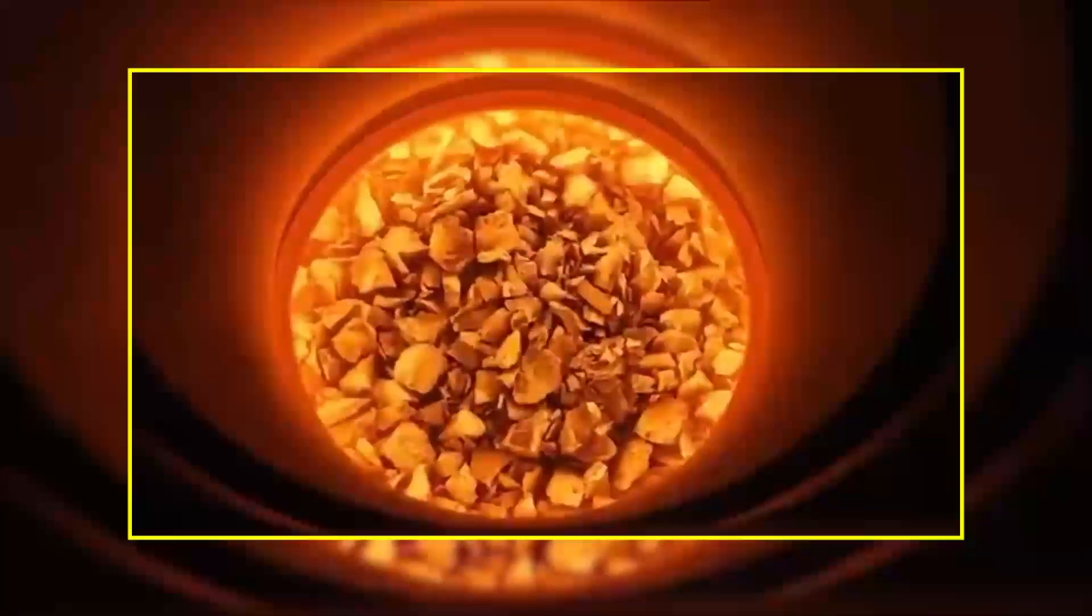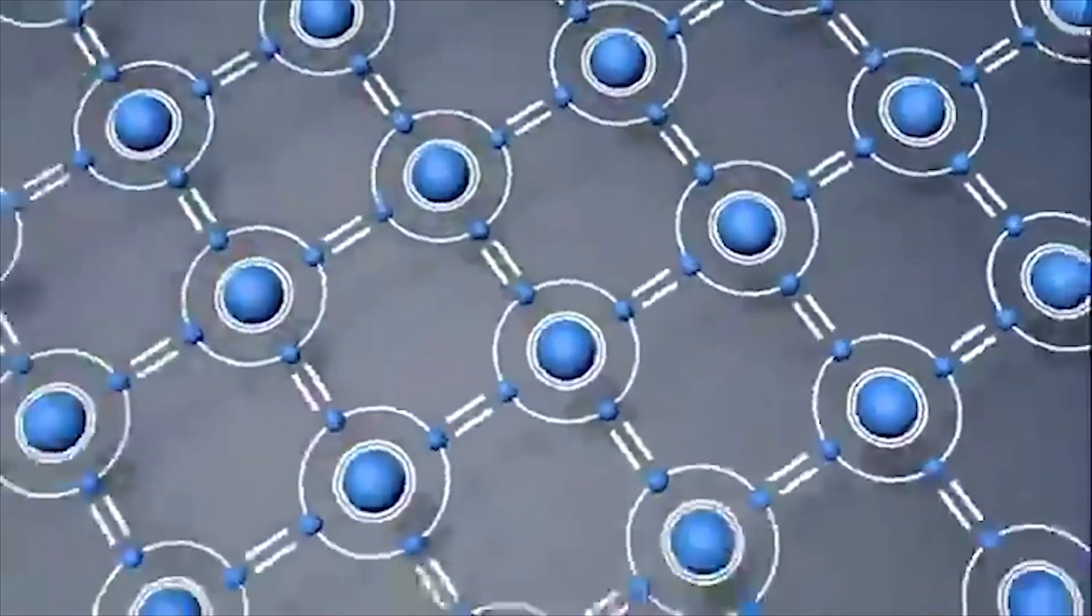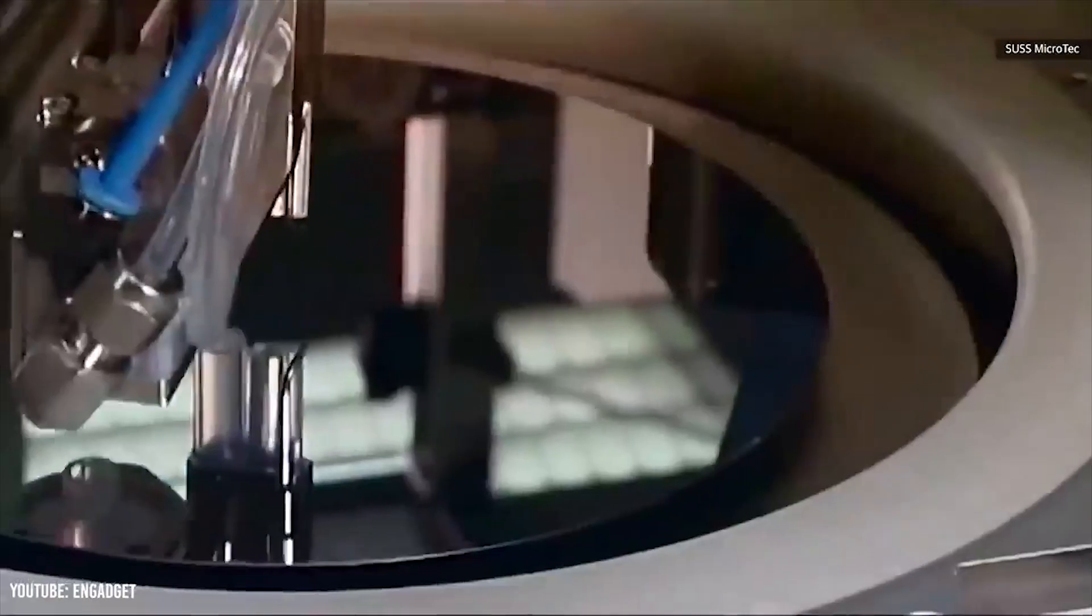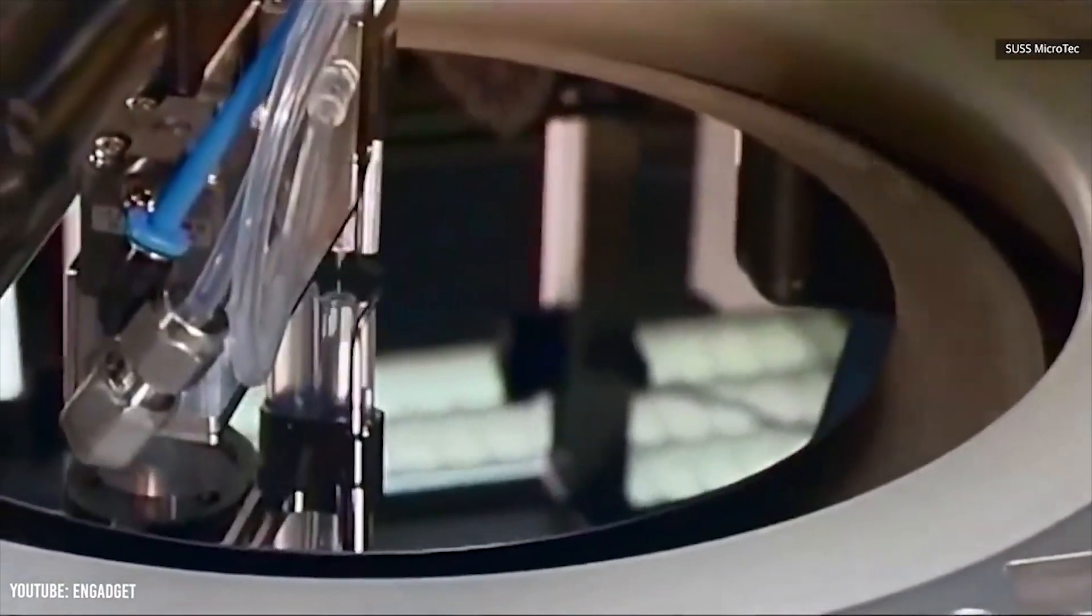Silicon, the material used to make transistors, is a semiconductor, which means it rarely conducts electricity, making it neither truly a conductor nor an insulator.